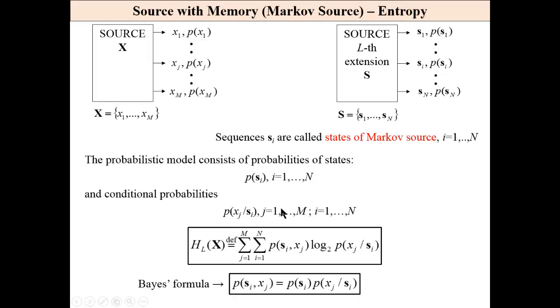This is a formula for entropy, very similar to a formula for conditional entropy: the joint entropy of the state and the next message and conditional probabilities. Here, logarithm of conditional probabilities from state to message.